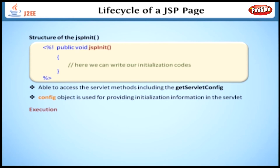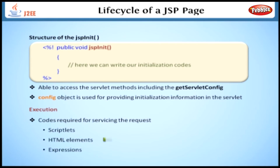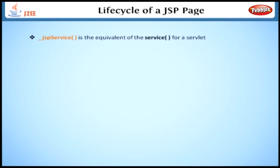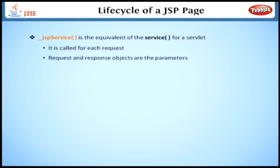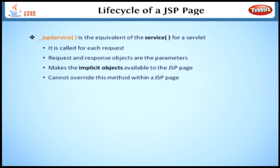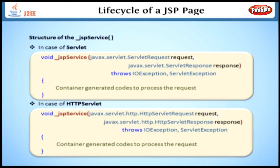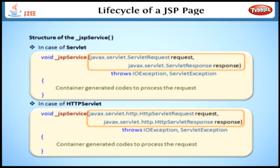The codes required for servicing the request — for example, the scriptlets, HTML elements, and expressions — are placed in the _jspService method using the translation of JSP. The _jspService method is called for each request. The request and response objects are the parameters of this method. The _jspService method makes the implicit objects available to the JSP page. We cannot override this method within a JSP page. Here are the code snippets for both cases: a request for a Servlet and an HTTP Servlet — only the parameters are different in both methods.